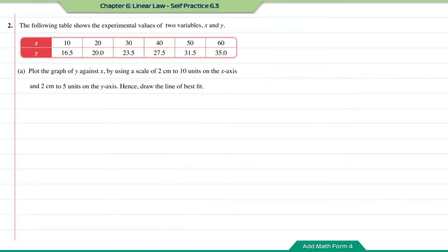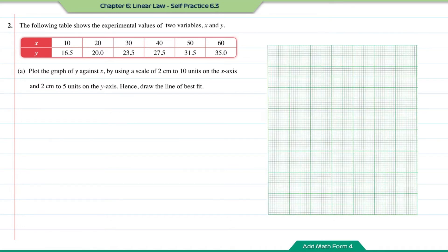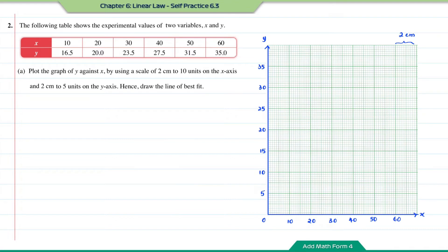Question number 2. The following table shows the experimental values of two variables X and Y. Part A: plot the graph of Y against X using a scale of 2 cm to 10 units on the X-axis and 2 cm to 5 units on the Y-axis. Hence, draw the line of best fit. We plot the scale, then the values from the table onto the graph, and then draw the line of best fit. This is what the graph of Y against X looks like.